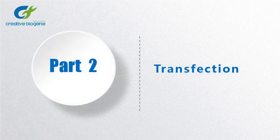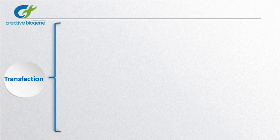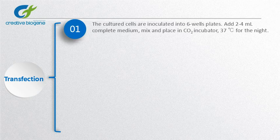Part 2: Transfection. Transfection contains the following 5 steps. Firstly, the cultured cells are inoculated into 6-well plates. Add 2 to 4 milliliters of complete medium, mix, and place in a carbon dioxide incubator at 37 degrees centigrade overnight.